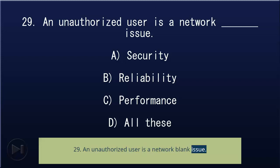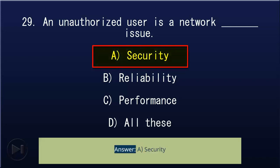29. An unauthorized user is a network blank issue: A) security, B) reliability, C) performance, D) all these. Answer: A, security.